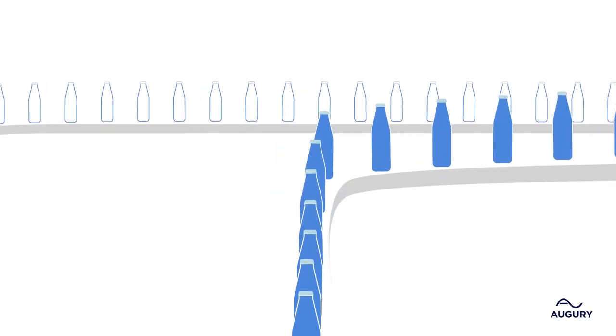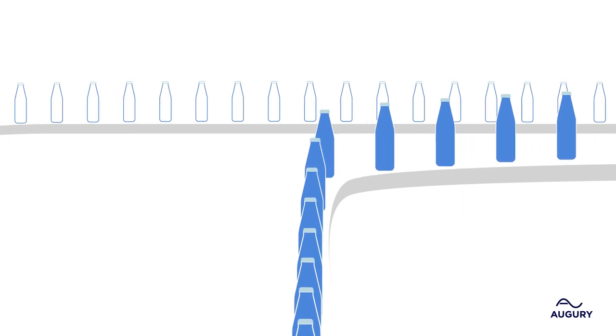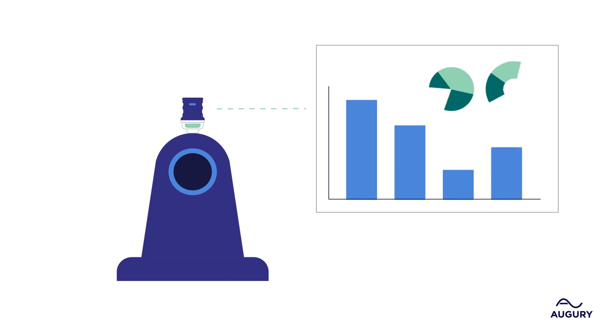When a machine fails, your production line can grind to a halt. That's why Augury provides you with real-time insights into the health of your machines.